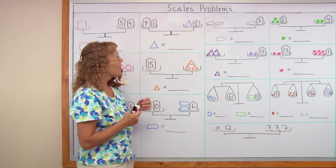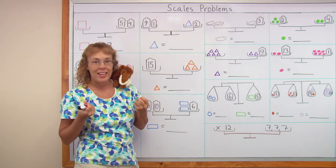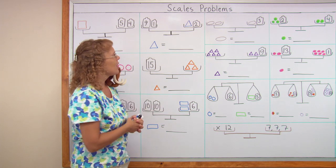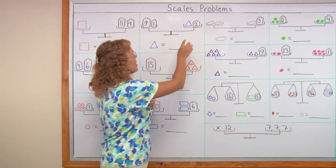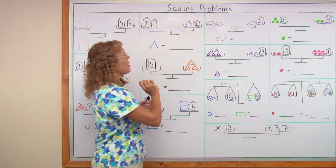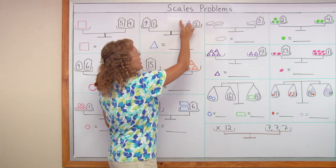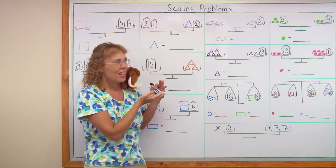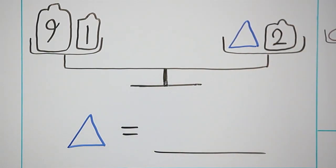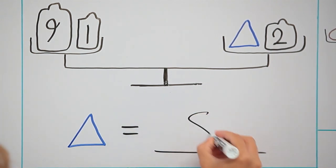Over here. Can you tell how much this blue triangle weighs or is equal? On this side we have 10, 10 kilograms, 10. On this side we have the triangle and 2. This side has to weigh 10 in total for the seesaw to be balanced. So this and this together are 10. So the triangle must be 8. That one was easy too.